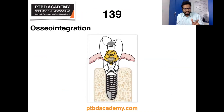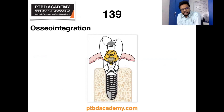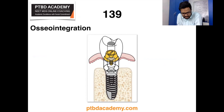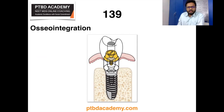Moving on: osseointegration is the next keyword. By definition, as given in Phillips, osseointegration is the process of forming a direct structural and functional interface between live bone and an artificial implant surface, as seen in the illustration, without any intervening fibrous connective tissue.